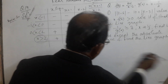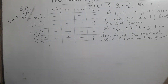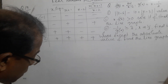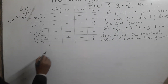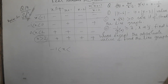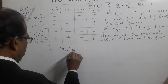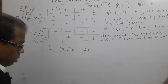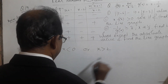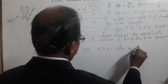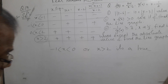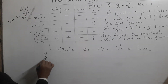You have to be clear about this system. So minus 1 is less than x less than 0, or x is greater than 2. Those are the intervals where the product is positive.